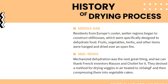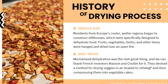During the Middle Ages, inventions began to explore the process of food dehydration further. Residents from Europe's cooler weather regions began to construct steel houses specifically designed to dehydrate food. Then in the mid-1800s, mechanized dehydration was the next great thing — French inventors Mason and Charlotte devised a method for drying vegetables in air heated to 105 degrees Fahrenheit and then compressing them into vegetable cakes, which were greatly appreciated by sailors as a welcome source of nutrition.